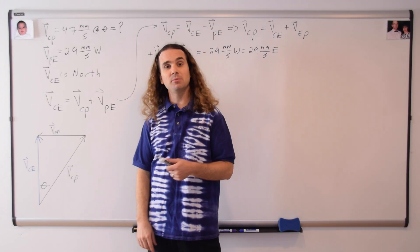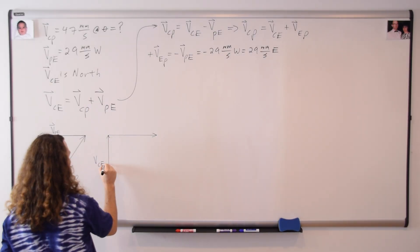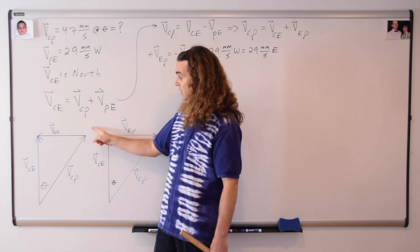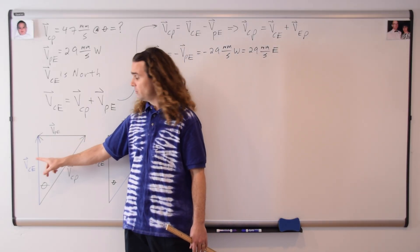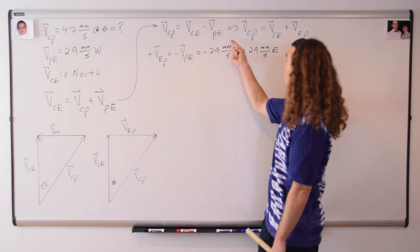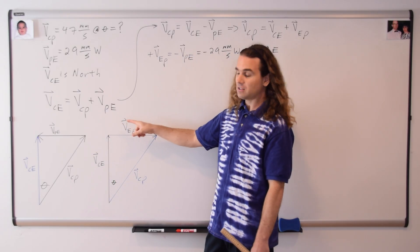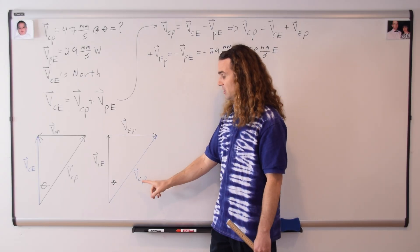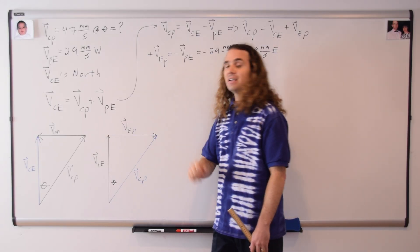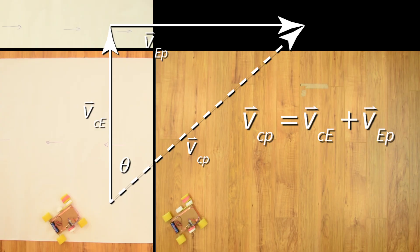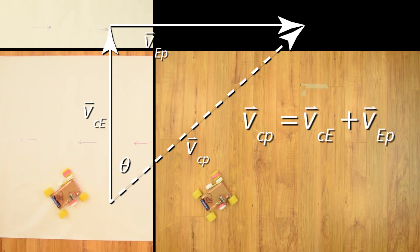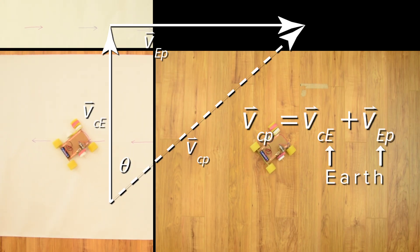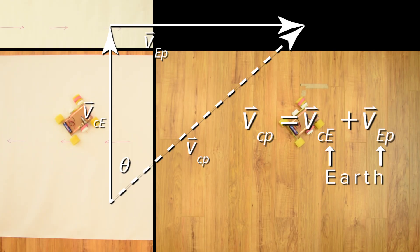We can redraw our tip-to-tail vector diagram. What we started with was v sub c-p plus v sub p-e adding up to the resultant v sub c-e in blue. We then rearranged that to get v sub c-e plus v sub e-p adding up to the resultant v sub c-p. Notice that the Earth subscript drops out of the right-hand side of the equation, just like it did in our previous relative motion problems, because the common subscript is on the inside.